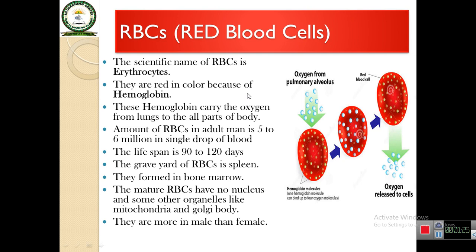The scientific name of RBCs is erythrocytes. They are red in color because of hemoglobin, and hemoglobin carries oxygen from the lungs to all parts of our body. The amount of RBCs in an adult is five to six million in a single drop of blood. The lifespan is 90 to 120 days, and the graveyard of RBCs is the spleen. They are formed in the bone marrow. The mature RBCs have no nucleus and lack other organelles like mitochondria and Golgi apparatus.